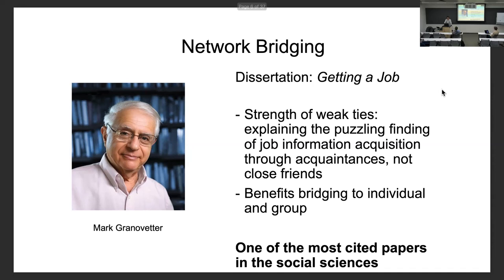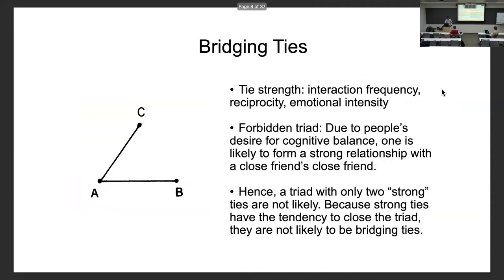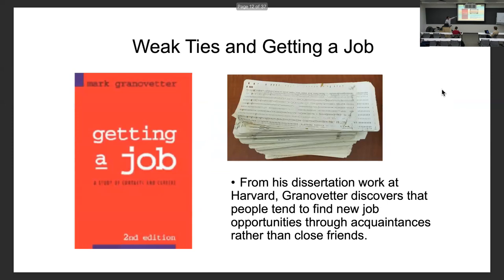His dissertation at Harvard was all about where people got job information. He did this survey and showed me the punch cards he used for data collection — he let me take a picture. He basically surveyed a little town in Massachusetts and found that people just bumped into acquaintances and out of nowhere received information about new job openings. That accounted for a sizable proportion of the information sources — just acquaintances. So it was a puzzle for him.